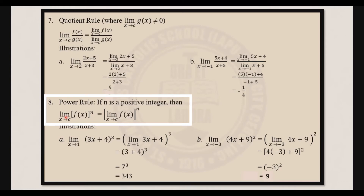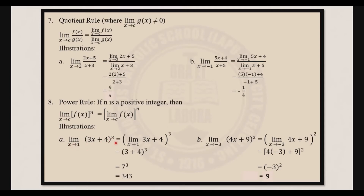Next, let's have the power rule. If n is a positive integer, then the limit of f of x raised to n as x approaches c is equal to the limit of f of x as x approaches c raised to n. For example, the limit of 3x plus 4 cubed as x approaches 1 is equal to the limit of 3x plus 4 as x approaches 1, cubed. Following the sum rule, we have 3 plus 4 cubed, so 7 cubed is 343.